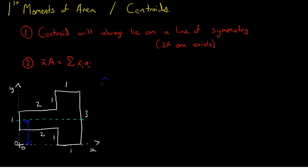So we can already write that G, which is the centroid or the coordinates of the centroid, is equal to the x-coordinate, which is something to be found, and the y-coordinate — in this case is halfway up this side of length 3, therefore is 3 over 2, or 1.5. So we already have the y-coordinate for our centroid, so it's just a matter of finding the x-coordinate, and for that we use this formula here.